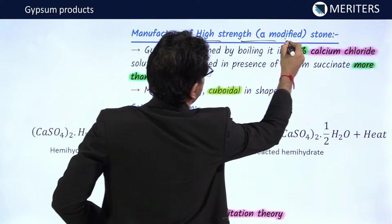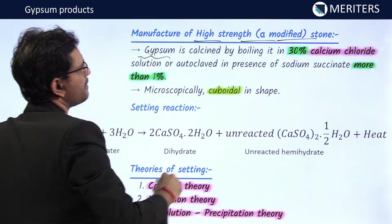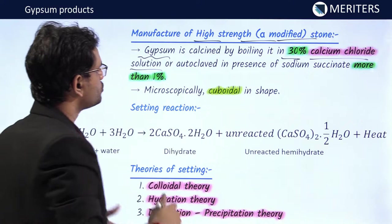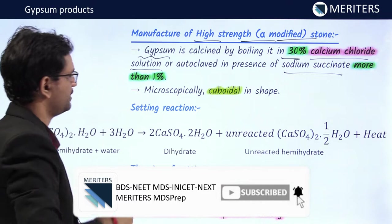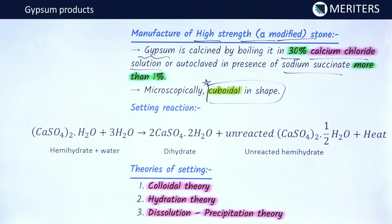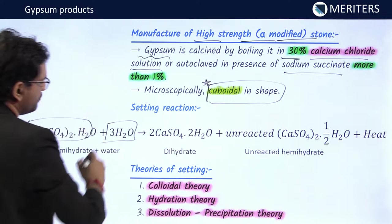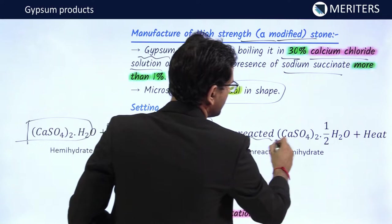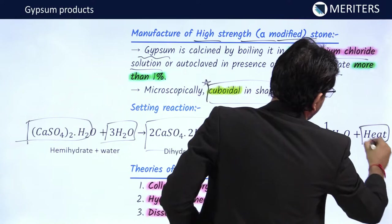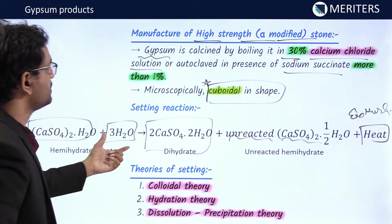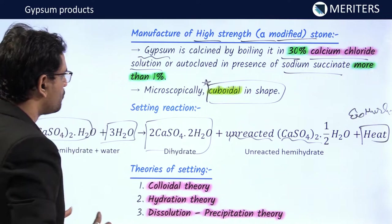To manufacture high-strength alpha modified stone, gypsum is calcined by boiling in a 30% calcium chloride solution, or autoclaved in the presence of sodium succinate. Using more than 1% sodium succinate produces cuboidal-shaped crystals. The setting reaction involves hemihydrate combining with water to form dihydrate, leaving some unreacted hemihydrate. This is an exothermic reaction that releases heat.